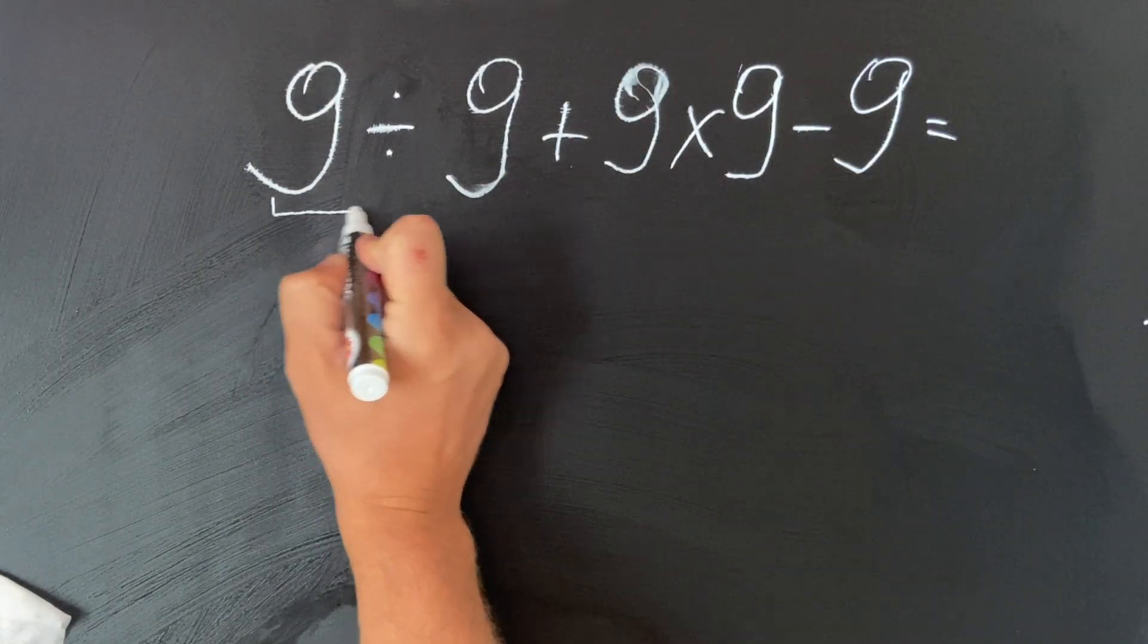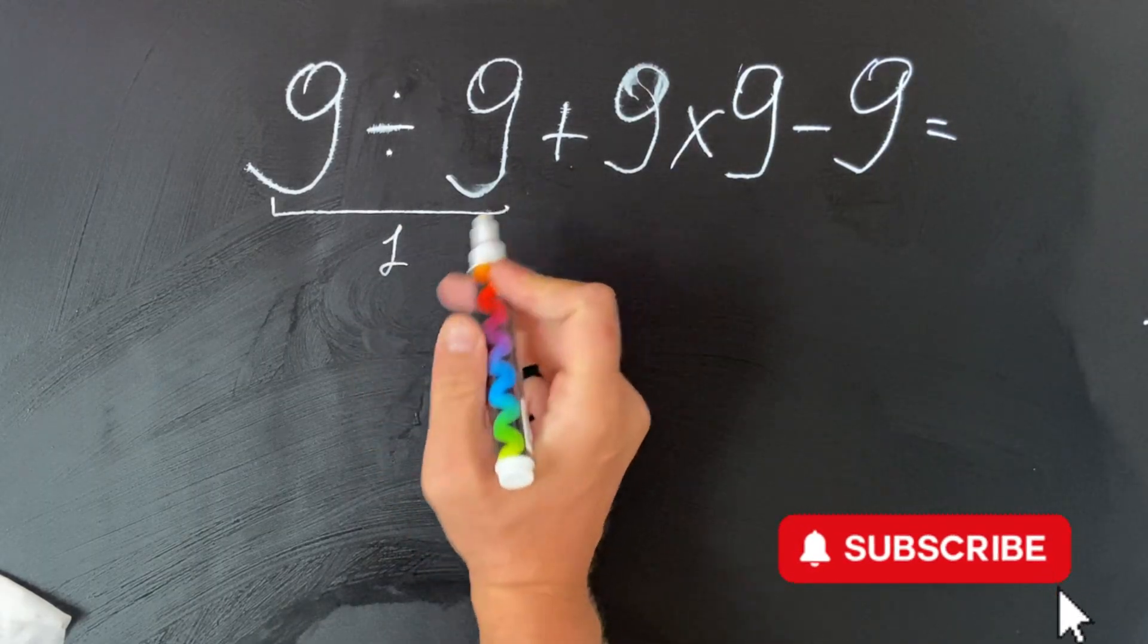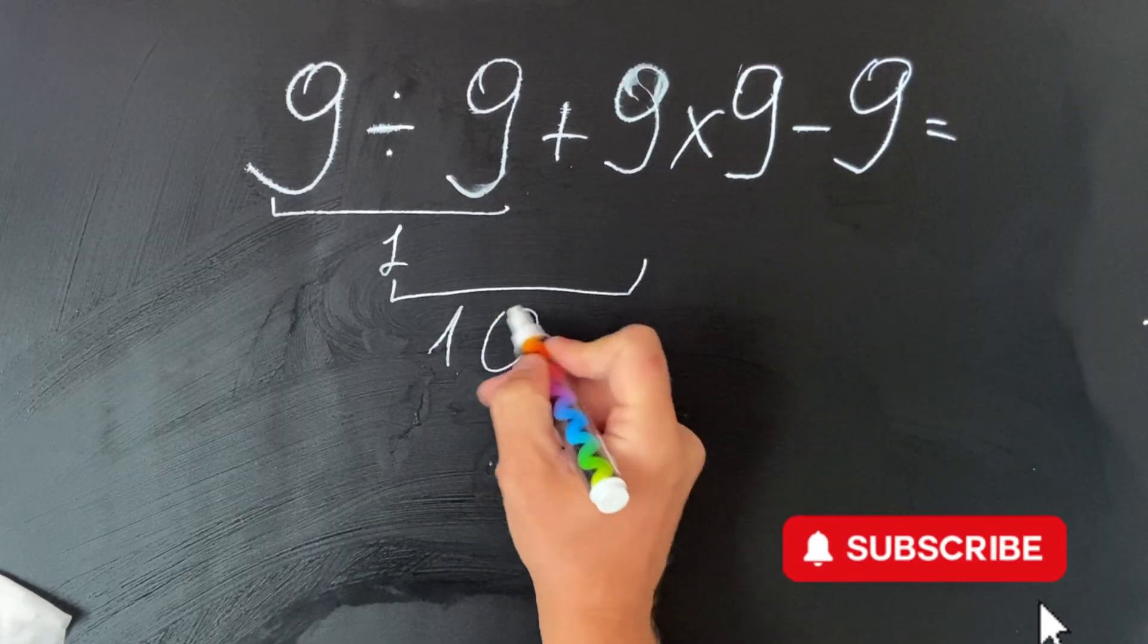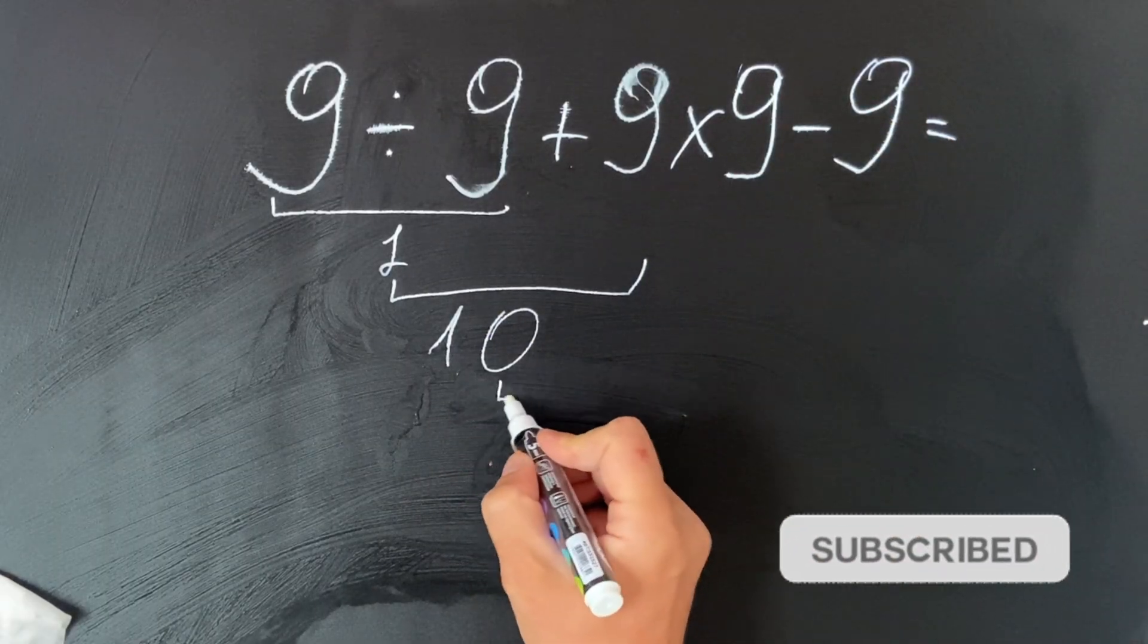So they get 9 divided by 9 is 1, 1 plus 9 equals 10, 10 multiplied by 9 they get 90.